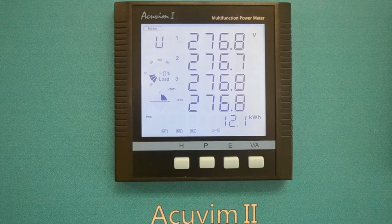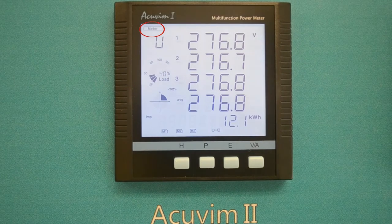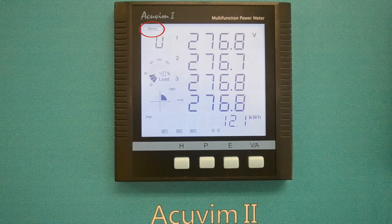When the meter is powered up, you will see the meter icon in the mode display section. This indicates the meter is now reading in meter data mode.